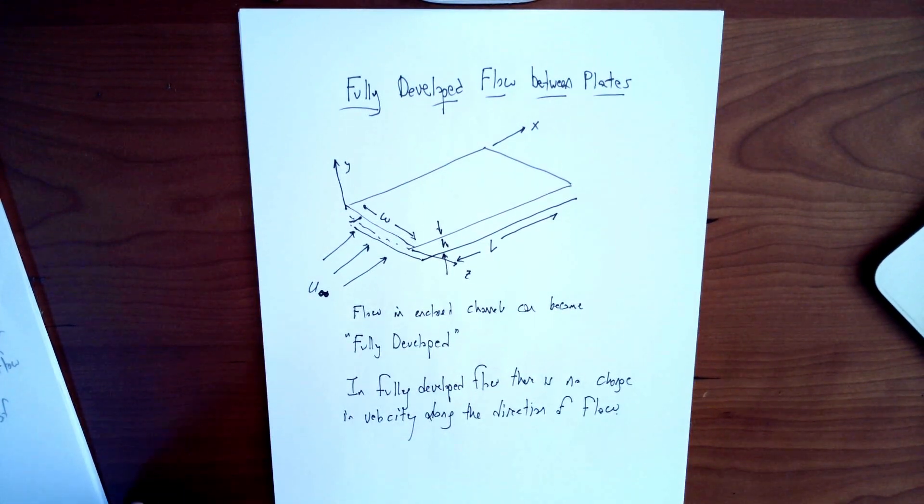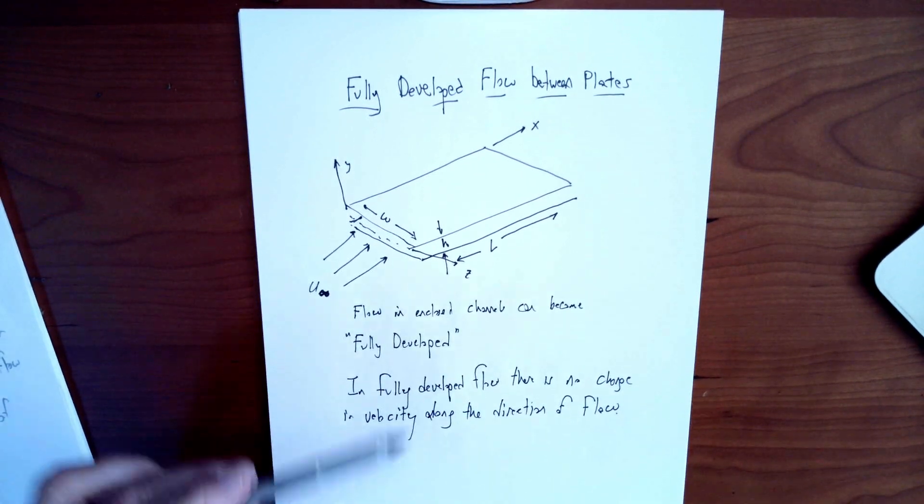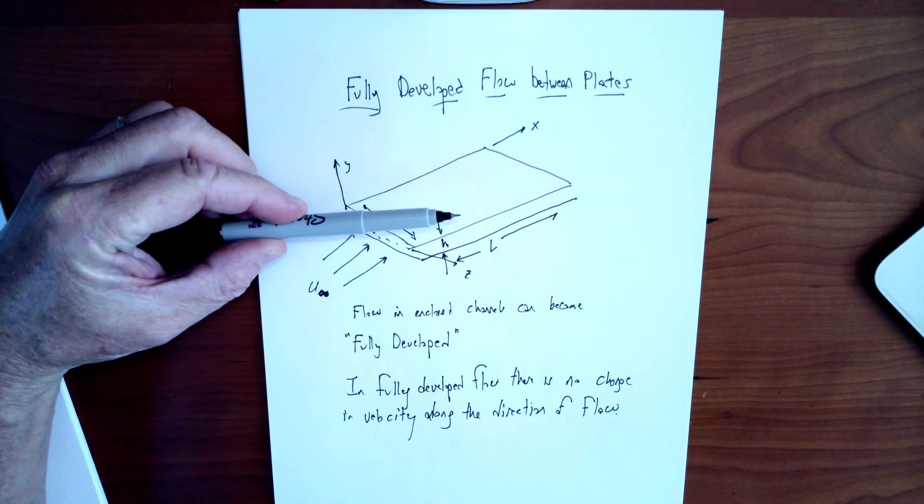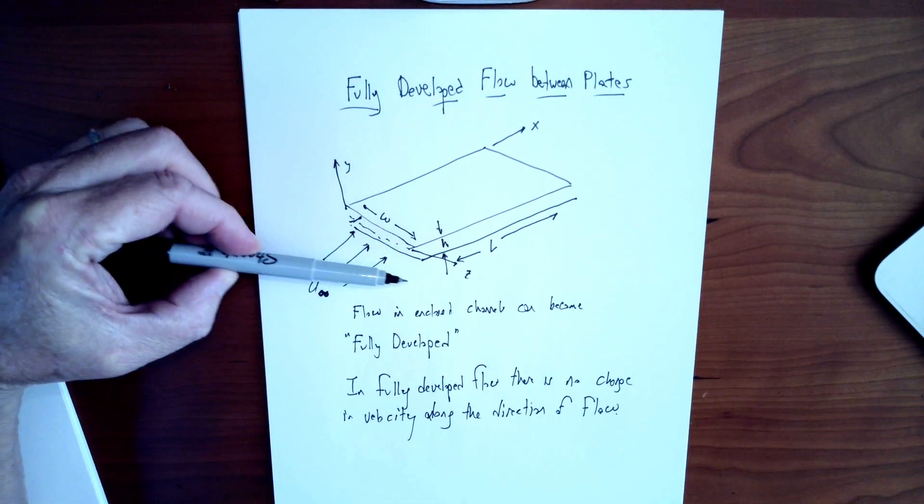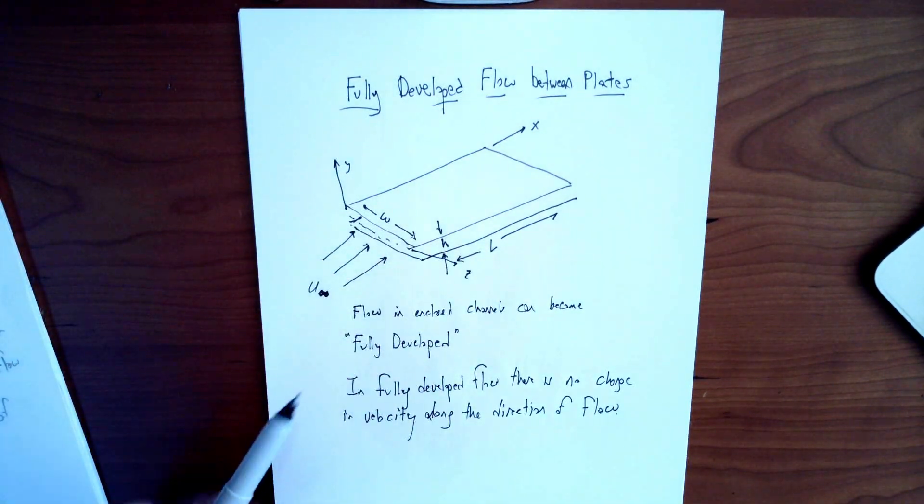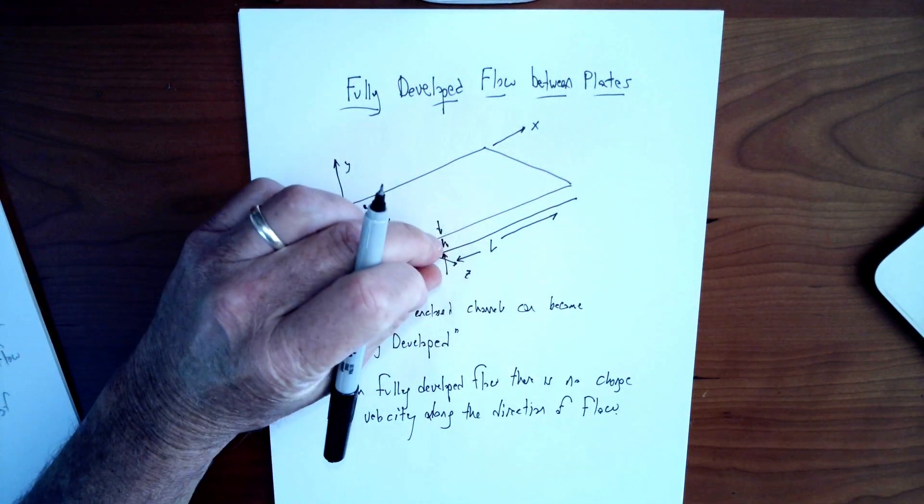Now we're going to talk about fully developed flow between plates. Imagine you have two plates separated by a gap H. So it's a small gap.